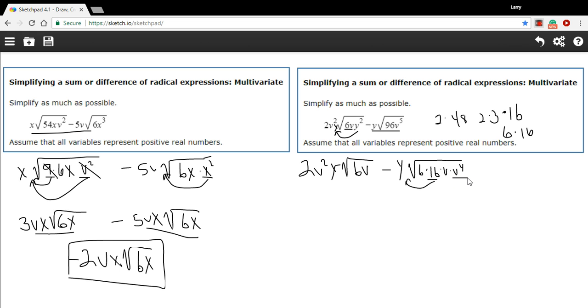So I can rewrite this term out front as 4y, well I could have put the v first, v² times the square root of, and what's left inside is just 6v.